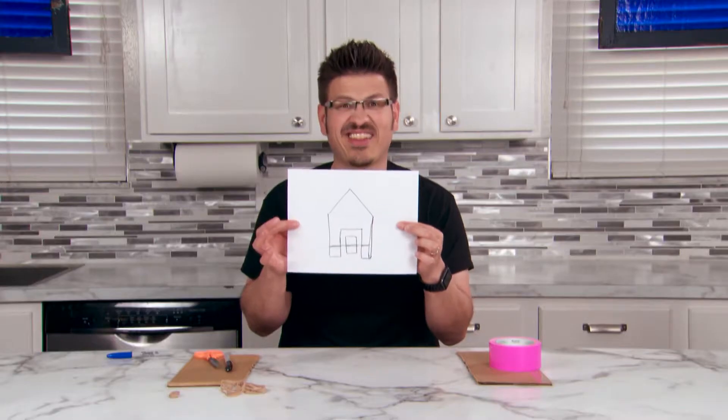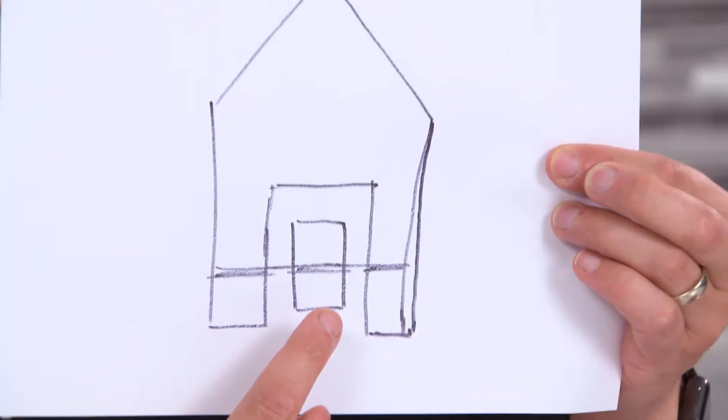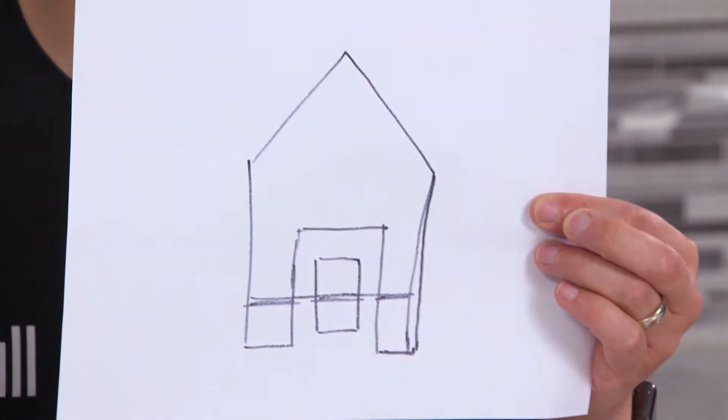There's my design. It kind of looks like a house. I've got my propeller that's going to propel my boat forward, and I'm going to use a rubber band to store energy and then make it spin.